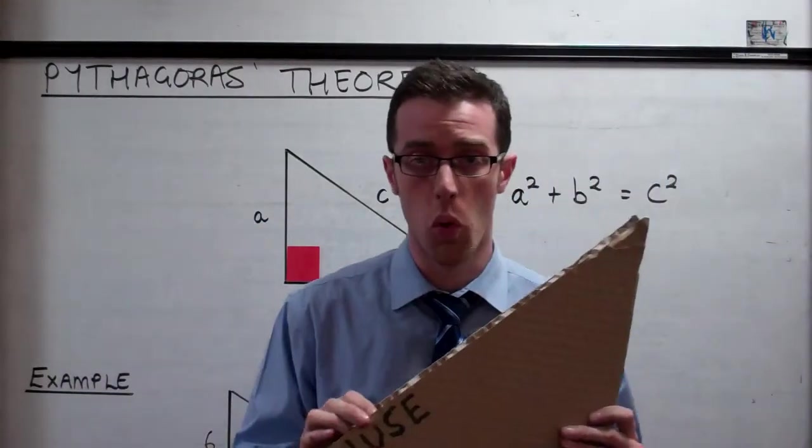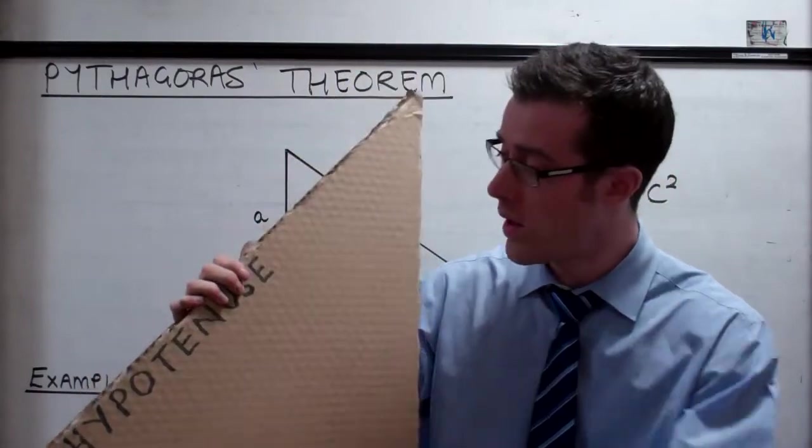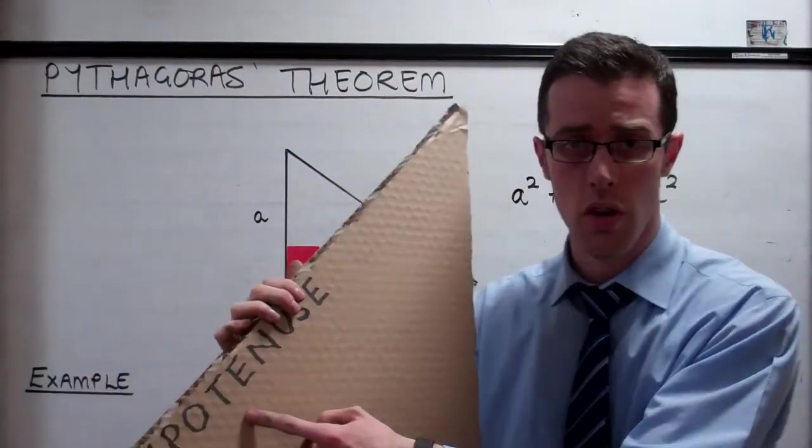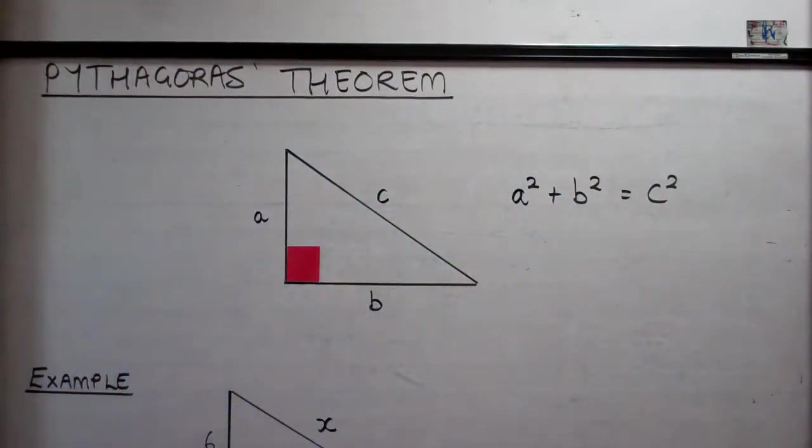and it's the longest side. So the hypotenuse is really important that before we go any further, you know what a right-angled triangle is and how to spot one, and you know where the hypotenuse is. Let's see if this triangle can fly.